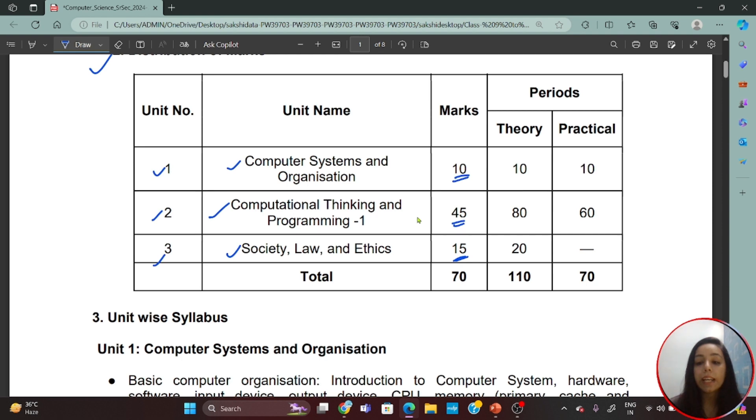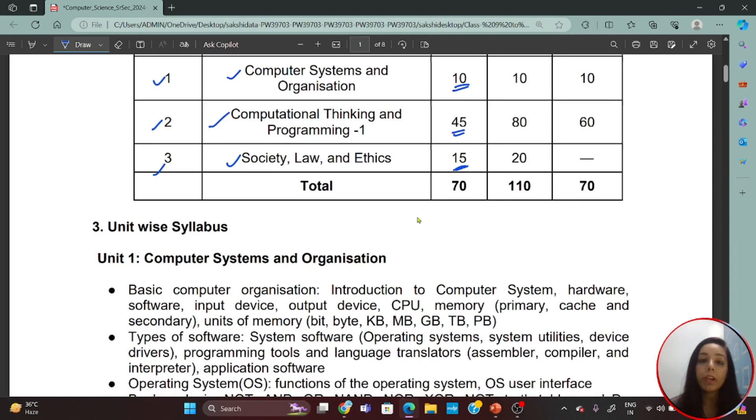So when you start learning Python, you will cover all the chapters in this unit. And the third unit is Society, Law, and Ethics, which will cover 15 marks. So if you see the total, you have 70 marks for your theoretical paper and 30 marks for your practical. When your paper has 100 marks, they are divided into 70 and 30. 70 is your theory paper and 30 is your practical exam. Same in your 12th class.